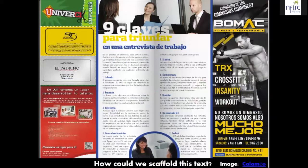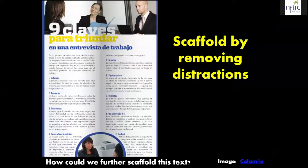So let's look at a few examples. Here's a random text from a culturally authentic magazine, and the first thing I would want to do as I scaffold this text is to remove anything that does not directly pertain to what I want learners to focus on. Notice the difference between this slide and this slide — just by removing the distractions I make this text dramatically easier to read. These kinds of things are things that a lot of times we don't think about that really do change learners' success with the tasks.